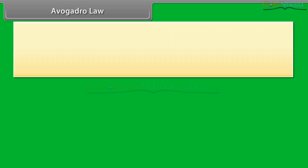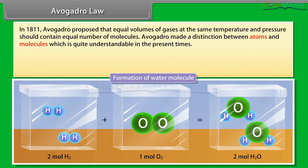Avogadro's Law: in 1811, Avogadro proposed that equal volumes of gases at the same temperature and pressure should contain equal numbers of molecules. Avogadro made a distinction between atoms and molecules, which is quite understandable in the present time.